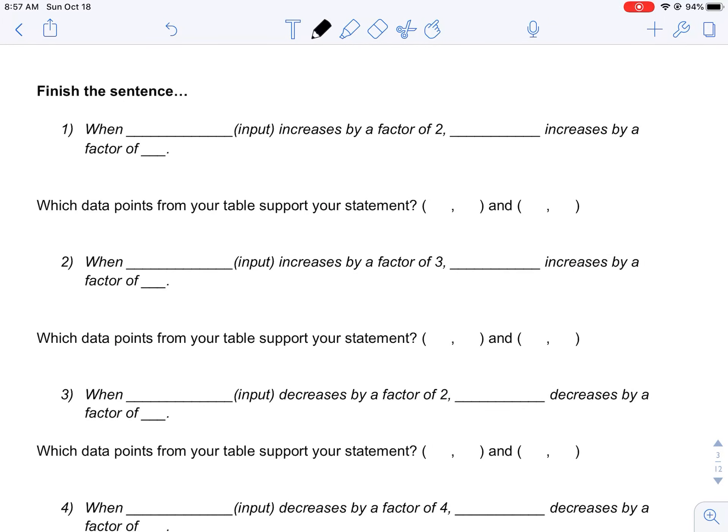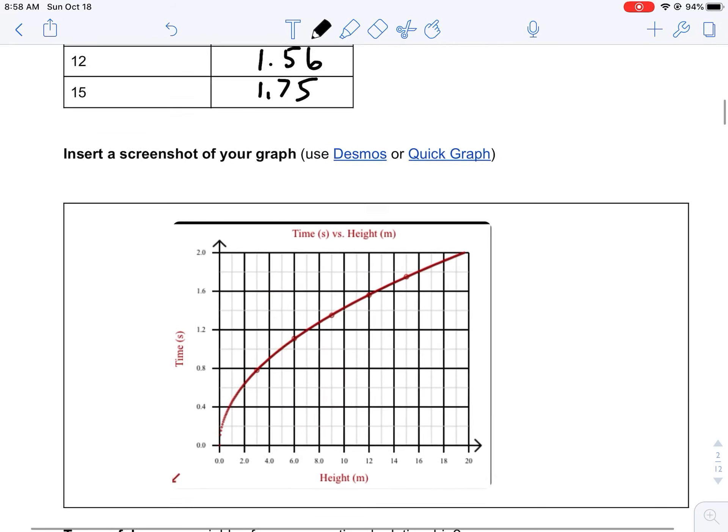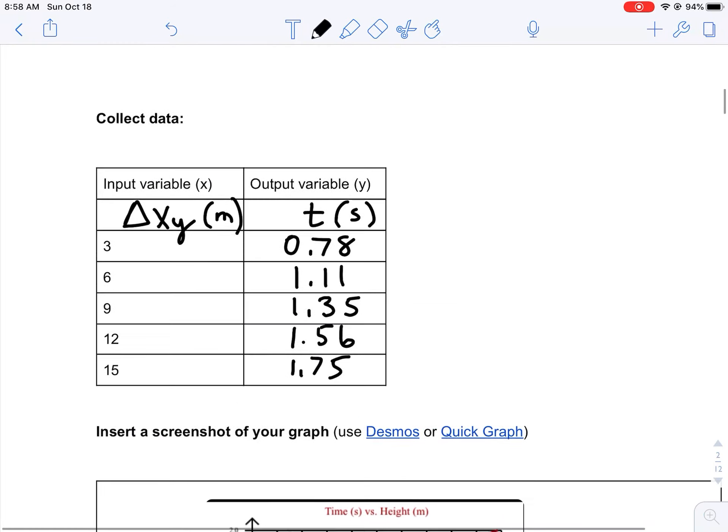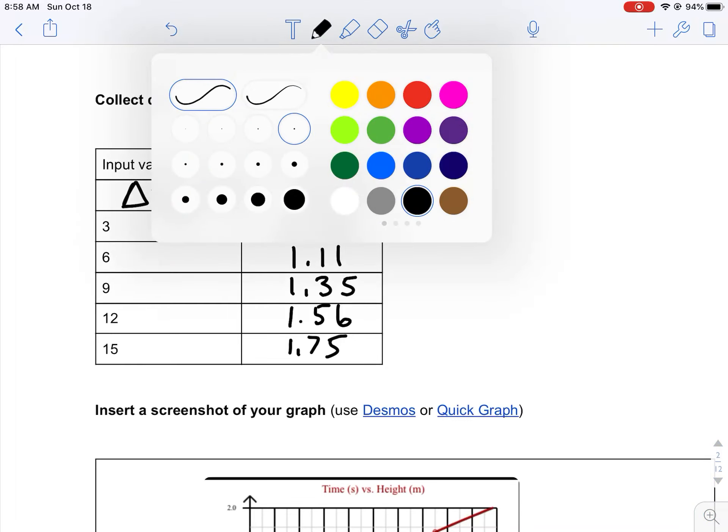Okay, so now we're going to answer these questions. When my input increases by a factor of two, my output increases by a factor of what? In order to answer that, I need to go to my data table. Or you could go to your graph and look at the mathematical relationship, but just for the sake of clarity, let's choose two numbers where it increases by a factor of two.